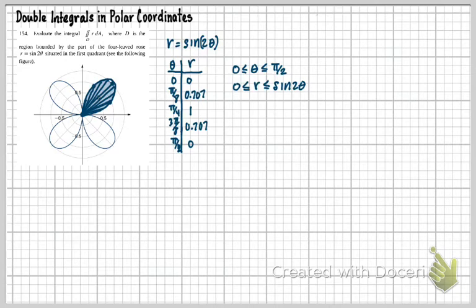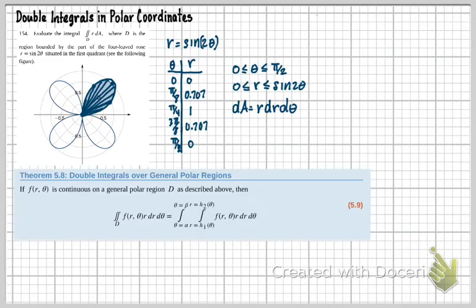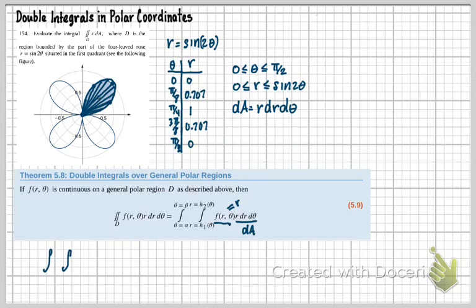Now let's talk about dA. Since we're working in polar coordinates, dA equals R dr dθ. For this problem, the function F is just R, because we're evaluating the double integral of R dA — so F(R, θ) equals R. When I set up the double integral, I have R times dA, which is R dr dθ.